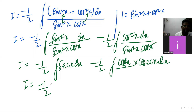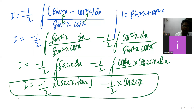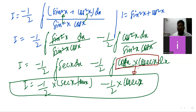We know the sec integration. What is sec integration? It is sec(x)·tan(x) — no log, just sec(x)·tan(x). And cot(x)·cos(x) combo form gives cosec(x). So sec integration is sec(x)·tan(x) + C. This is the final answer.